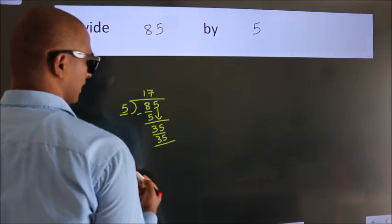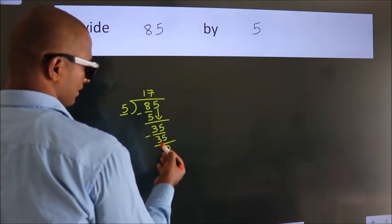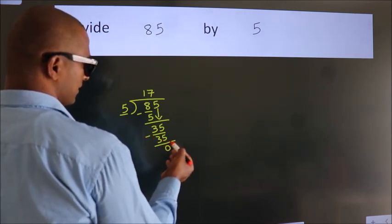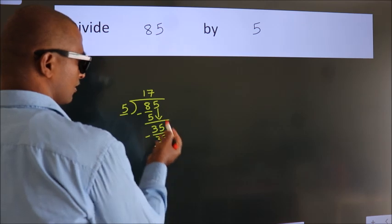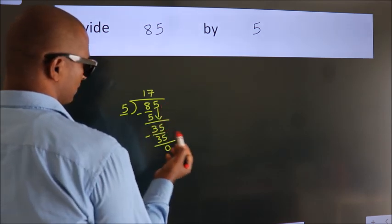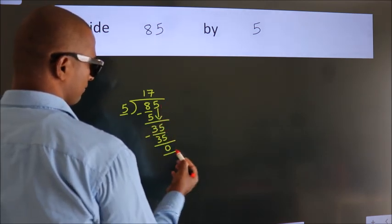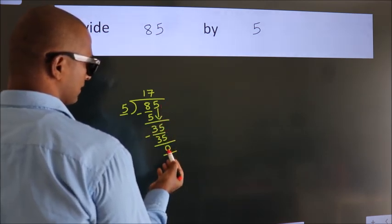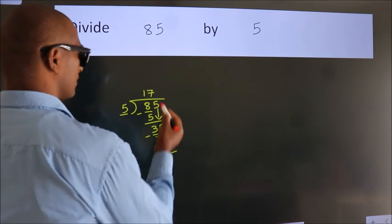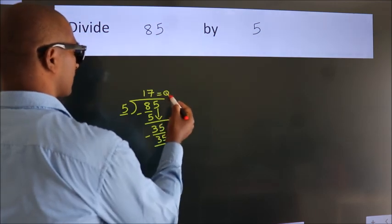Now we subtract. We get 0. After this, there are no more numbers to bring down. We got remainder 0, so this is our quotient.